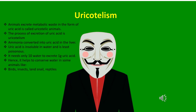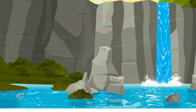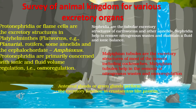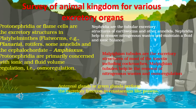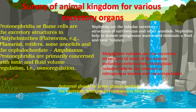A survey of the animal kingdom reveals various excretory organs. Protonephridia or flame cells are the excretory structures in Platyhelminthes (flatworms) such as Planaria, rotifers, some annelids, and the cephalochordate Amphioxus. They are primarily concerned with osmoregulation. Nephridia are the tubular excretory structures of earthworms and other annelids. Malpighian tubules are the excretory structures of most insects including cockroaches. Antennal glands or green glands perform the excretory function in crustaceans.